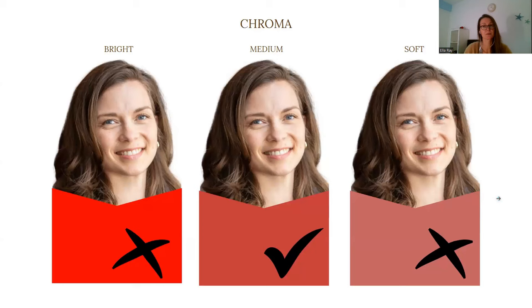To determine the chroma, there are two levels of analysis. The first is to look at dominant color frequencies present in the skin tone, eyes, lips, and hair. In her case, she has multiple dominant color frequencies, especially in her eyes and in her hair, which puts her automatically into a rather medium chroma type.